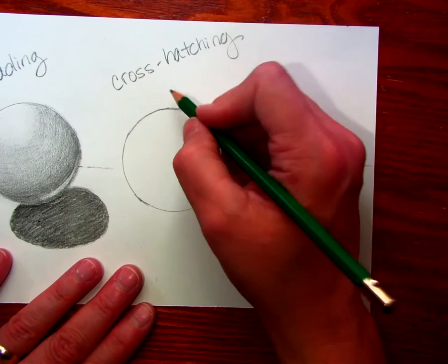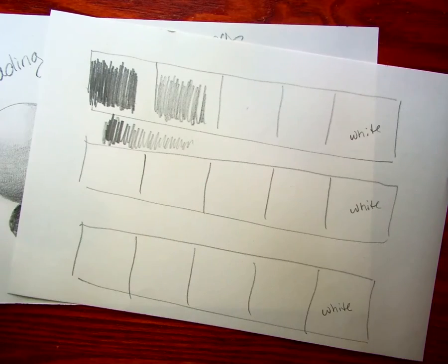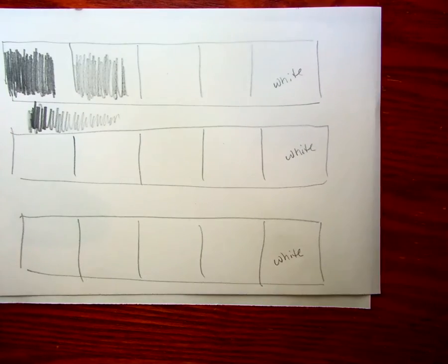Don't forget to leave that reflected light. Cross-hatching is doing the same thing as this, but with different lines, okay?